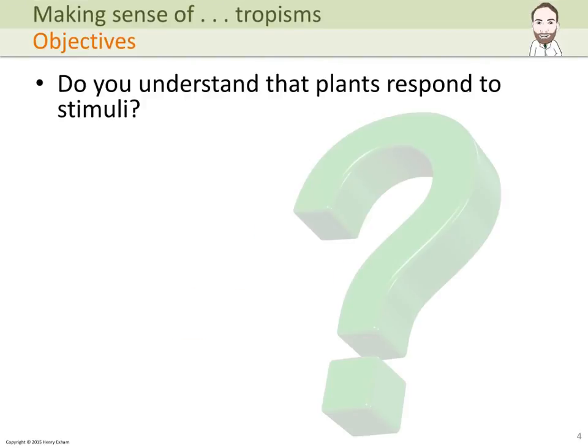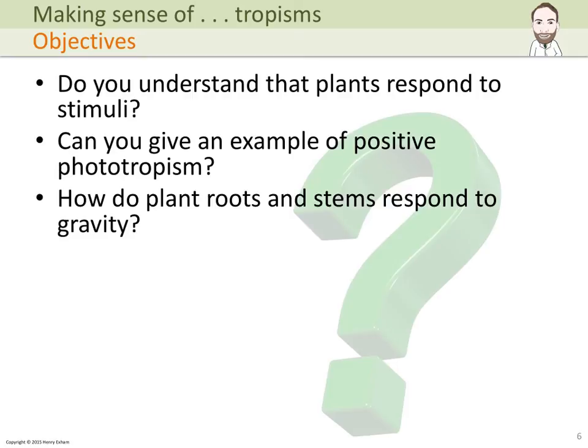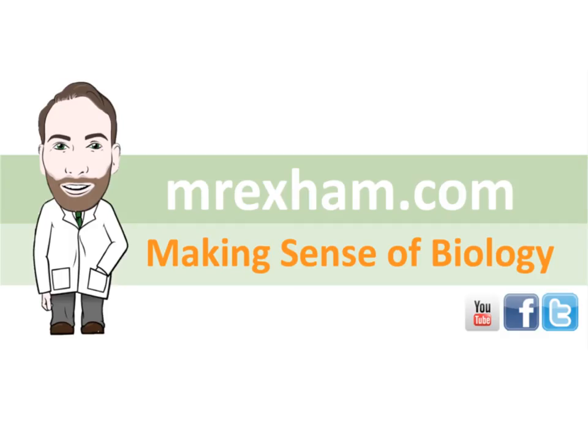That's the end of this short video on tropisms. By now, you should be able to understand that plants can respond to stimuli, give an example of positive phototropism occurring in the shoots, and explain how roots and stems respond to gravity in geotropism. Thank you very much for listening, and visit my website, mrexm.com, for more biology resources.